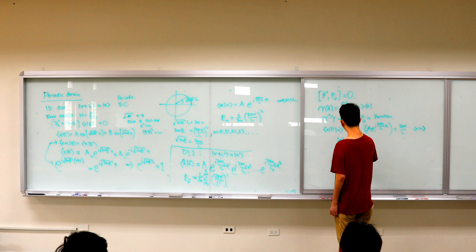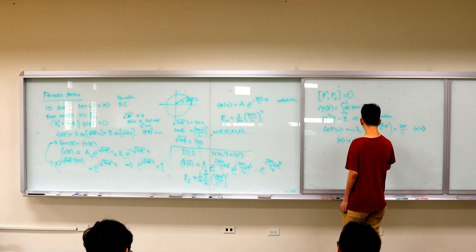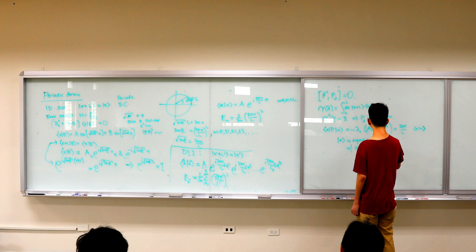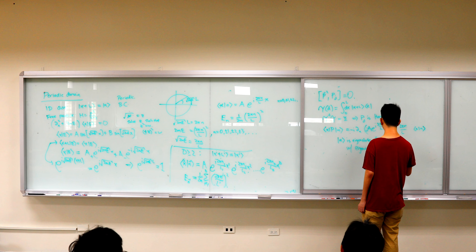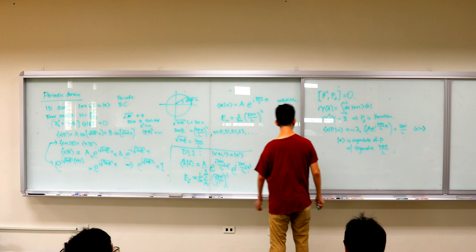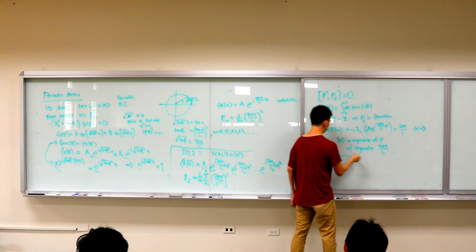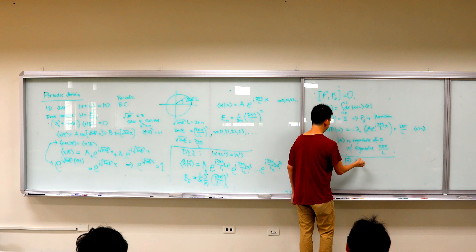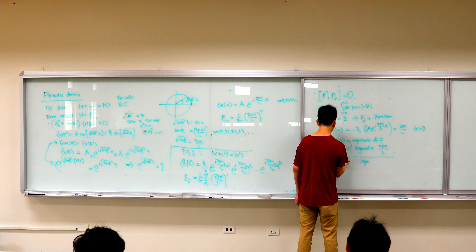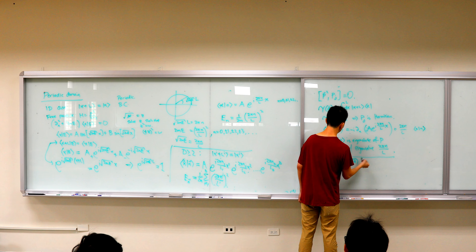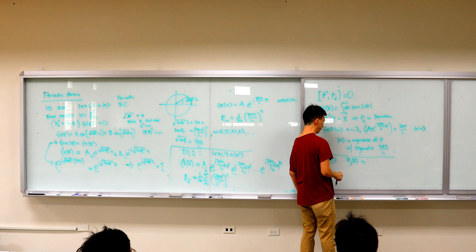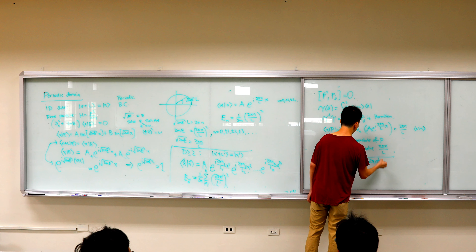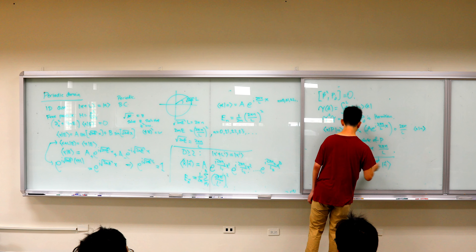Not only have we shown that this state is an eigenstate of p — state n is an eigenstate of p with eigenvalue 2 pi n over L. So for d greater than or equals to 2, the n-vector state is an eigenstate. Summarizing in equations: pj acting on |n⟩ gives (2 pi n_j over L_j) times |n⟩.